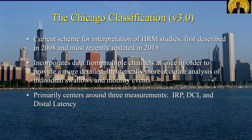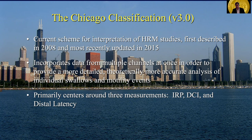The Chicago Classification was first proposed and put into place in 2008 and the most recent revision was updated in 2015. The fourth version is actually in development right now and will be published relatively soon. This incorporates data from multiple channels at once in the high resolution manometry paradigm in order to provide a detailed and more accurate representation of what's going on with individual swallows and motility events that happen during the swallow sequences.